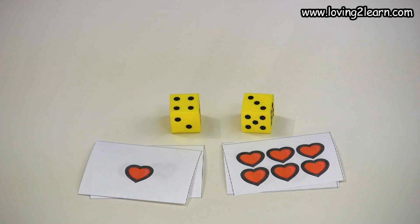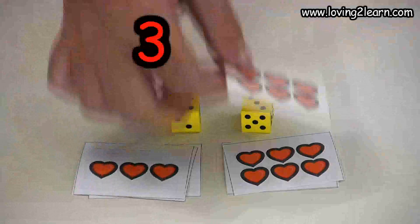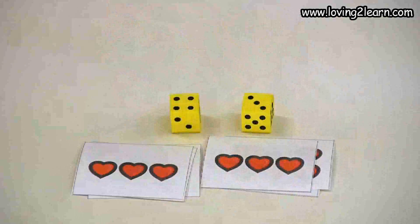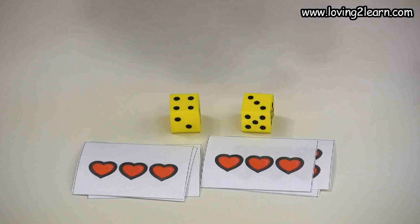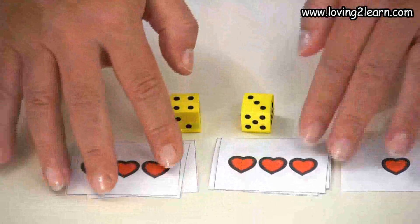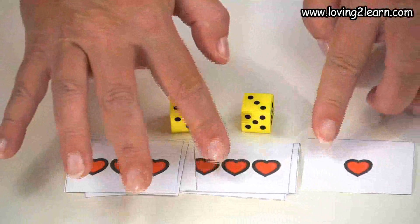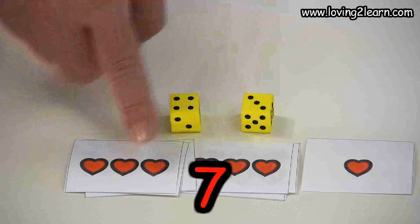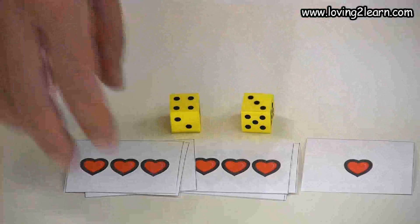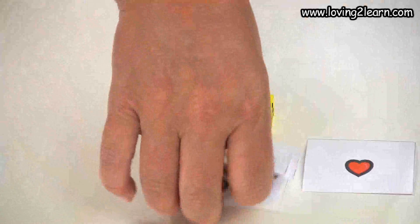Then we'll do three, six, and we need one more, which will also equal seven. Three, six, seven. So then we played three different combinations.